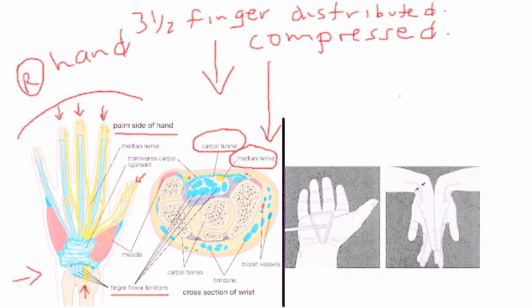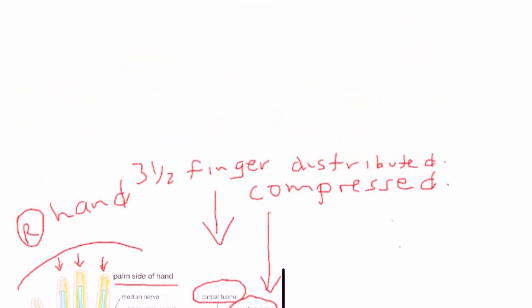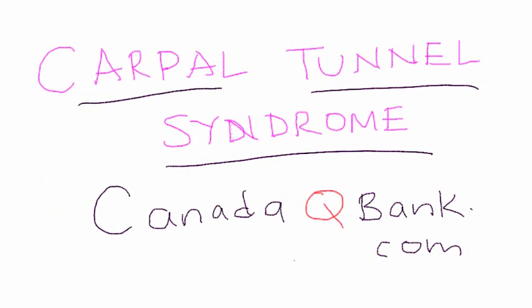That's a little anatomical diagram describing the carpal tunnel and the median nerve. Let's erase all this and get started. First of all, a little bit of history as to why this happens.